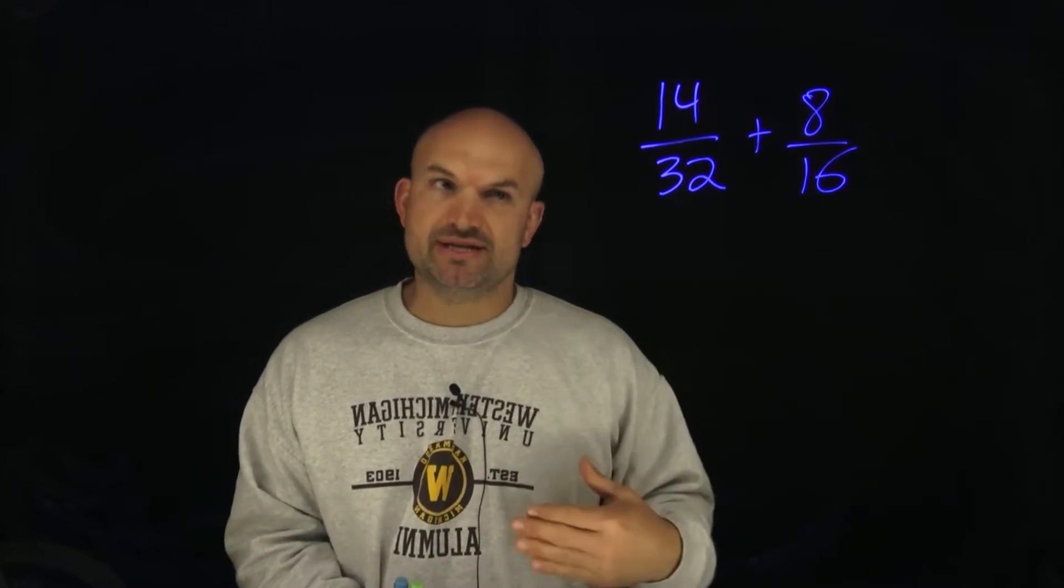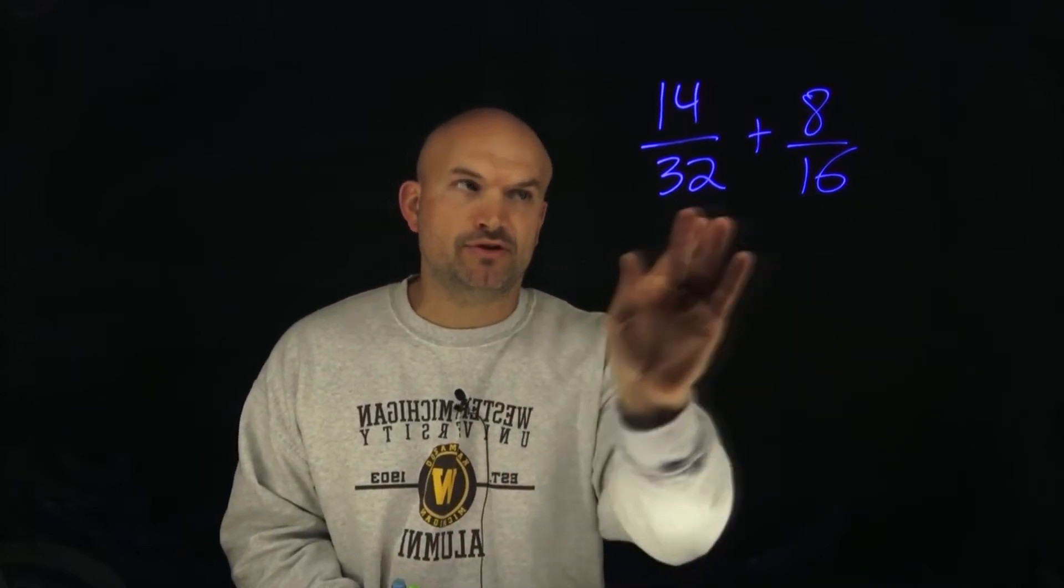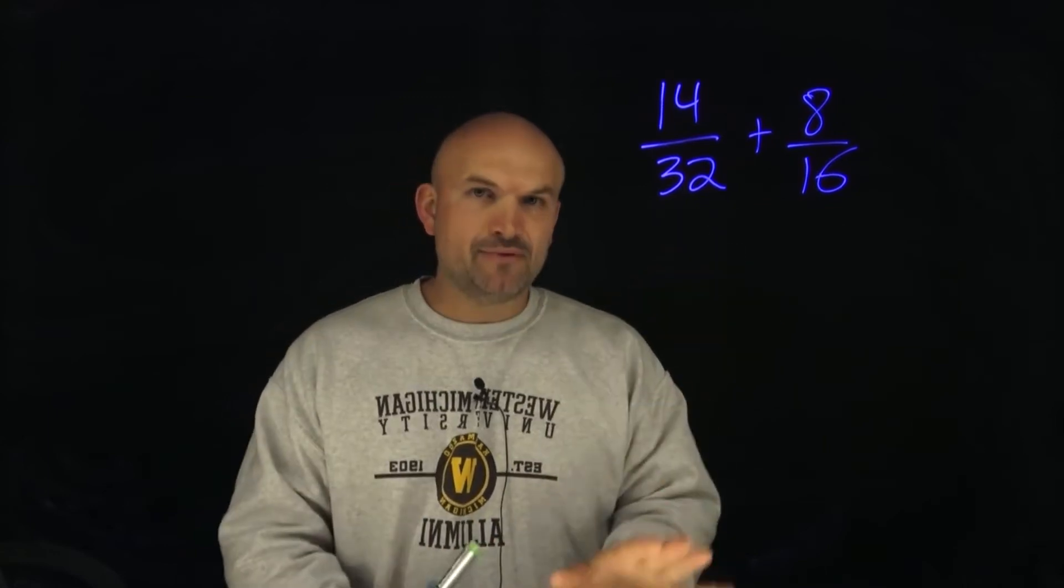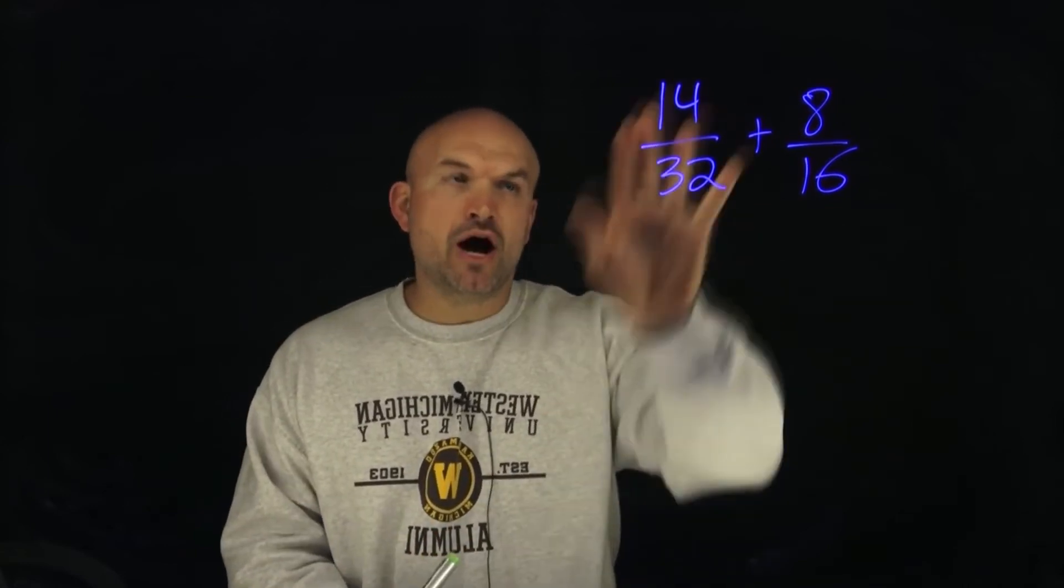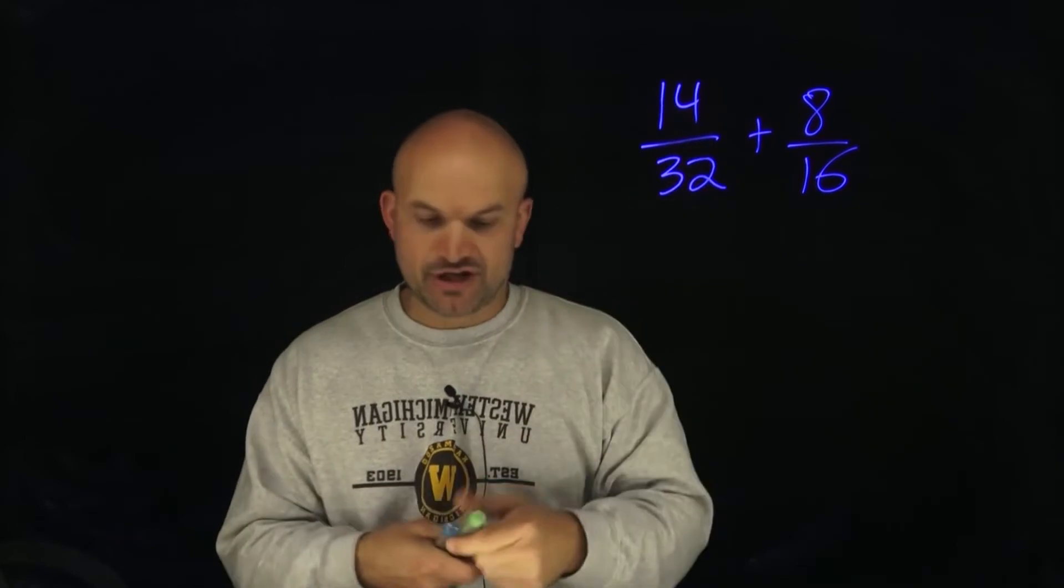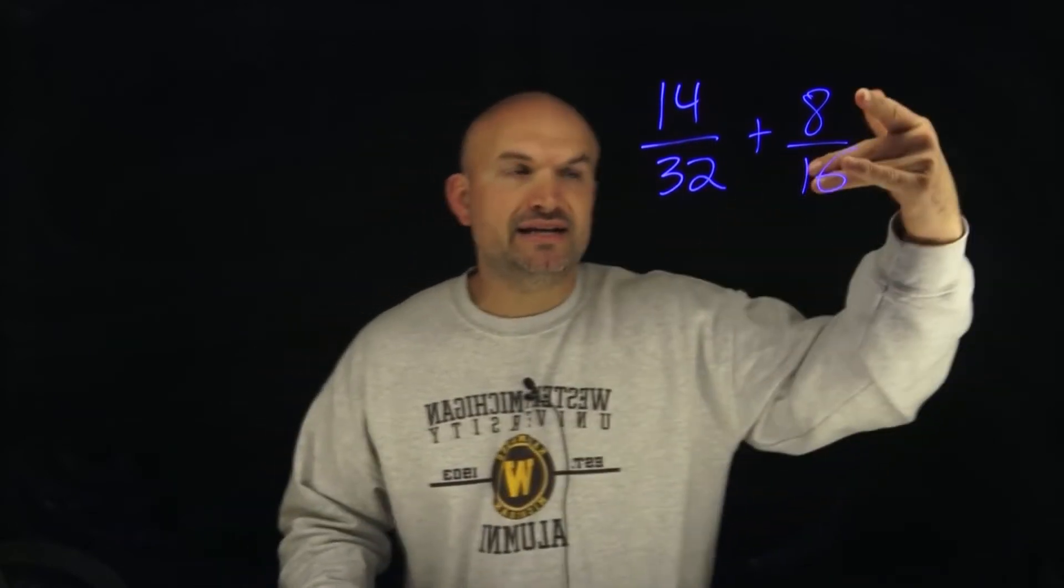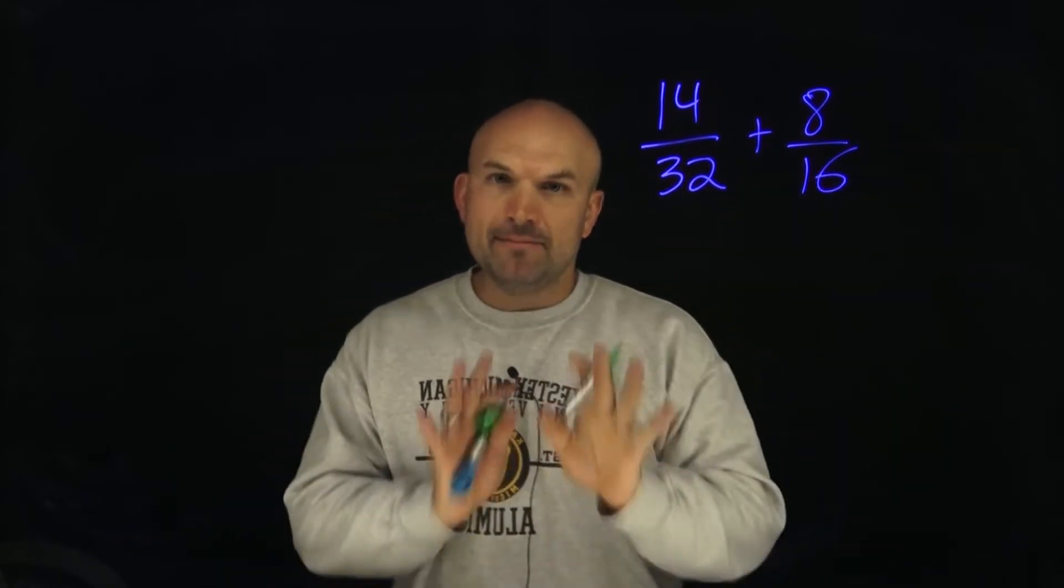So the thing we want to do is try to reduce these and try to find the smallest number that both 32 and 16 have in common. And we could fall into another trap of students say, oh, well, I can divide by 2 on this left-hand side and I can divide by 8 here on the right-hand side. But be careful.